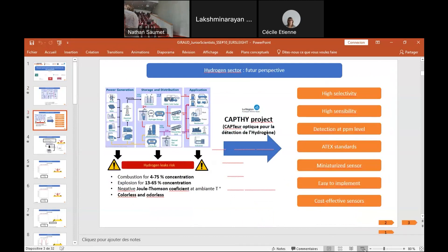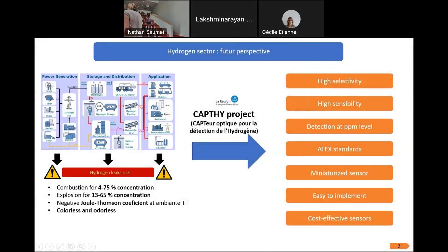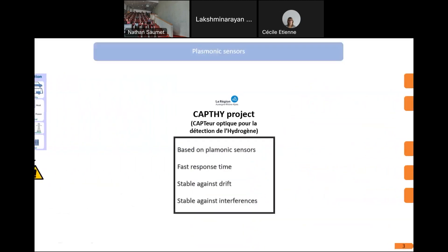This is the context where the CAPTI project is essential since it aims to develop hydrogen sensors with high selectivity and sensitivity, detection at the PPM level with high tech standard, also miniature sensors, easy to implement on site, and also cost effective. The CAPTI project is based on plasmonic sensors which commonly have fast response time and are stable against drift and interferences.